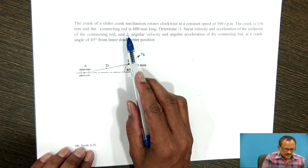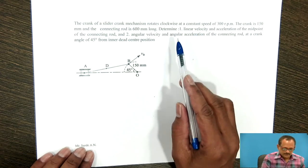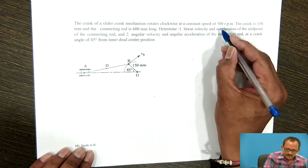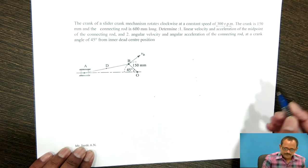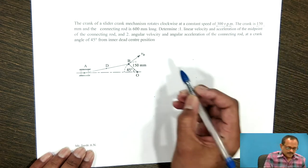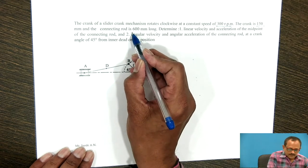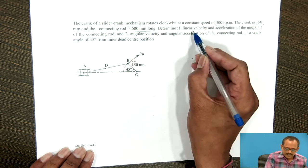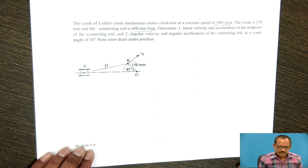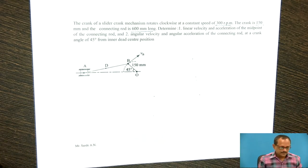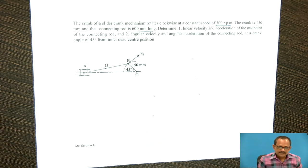The statement of the problem: the crank and slider mechanism rotates clockwise at a speed of 300 rpm. The crank is 150 mm and the connecting rod is 600 mm long. Determine the linear velocity and acceleration of the midpoint of the connecting rod, and the angular velocity and angular acceleration of the connecting rod at a crank angle of 45 degrees from the inner dead center position.